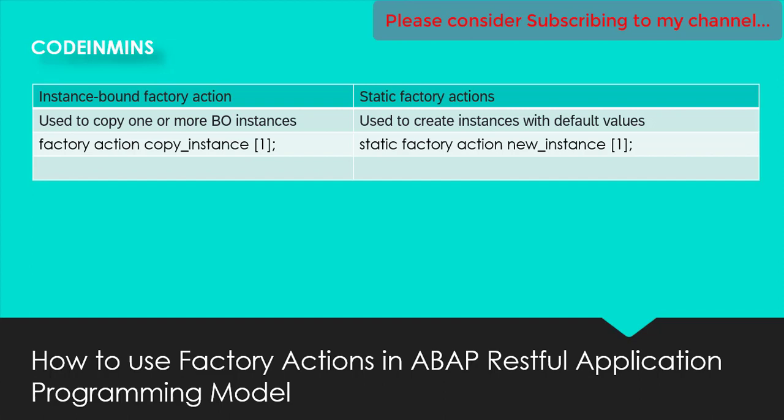For example, if you define a normal action you typically work on one or two fields of an instance — for example, updating the status of a field, which we have seen in a previous video. But when you talk about static factory actions, it creates an entirely new entity with default values — it is not updating anything but creating a whole new BO instance. There is no result parameter in static factory actions; everything is determined by a response parameter which is mapped.